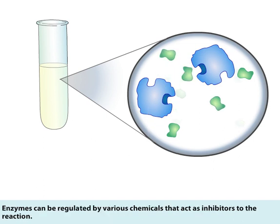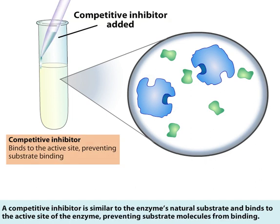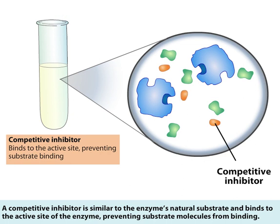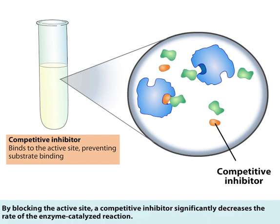Enzymes can be regulated by various chemicals that act as inhibitors to the reaction. A competitive inhibitor is similar to the enzyme's natural substrate and binds to the active site of the enzyme, preventing substrate molecules from binding. By blocking the active site, a competitive inhibitor significantly decreases the rate of the enzyme-catalyzed reaction.